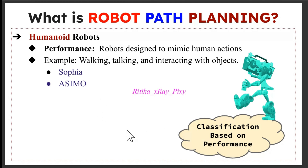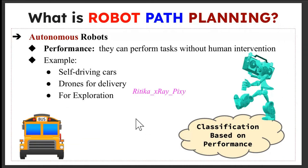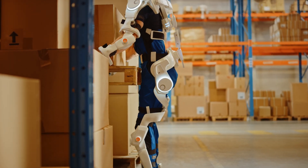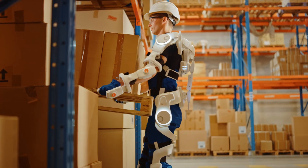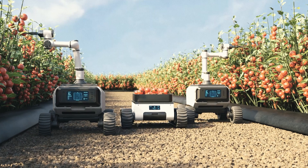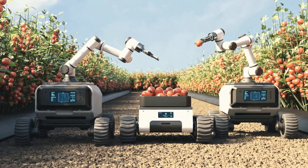We also have autonomous robots, which can perform tasks without human interaction. They use sensors and artificial intelligence to navigate and make decisions on their own — for example, self-driving cars, delivery drones, and warehouse robots doing different tasks. Then we have swarm robots, which work together in large numbers like a swarm of bees, communicating with each other to perform complex tasks.